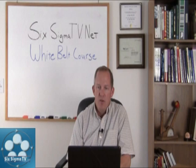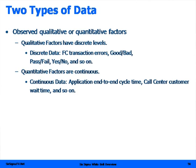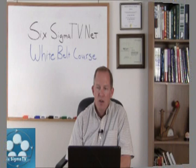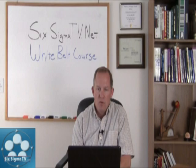There are two types of data we deal with. We have qualitative or quantitative data. Qualitative factors have discrete levels — number of errors, good, bad, pass, fail, etc. Whereas quantitative factors are continuous, using some type of a measurement system. So cycle times, call center handling times, etc., are considered to be continuous data.